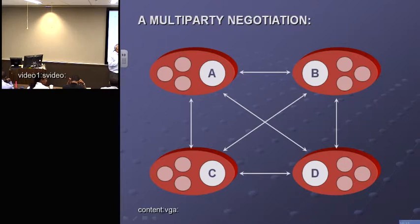Moving from a one-on-one negotiation to a more complex negotiation called multiparty. But we don't have C and D, we only have A and B.